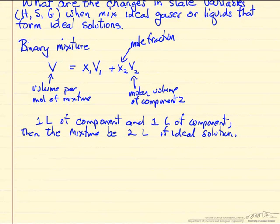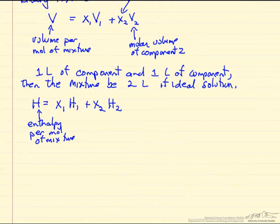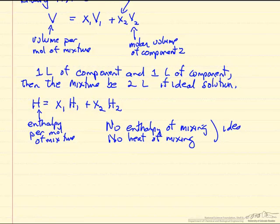And a similar relation exists for the enthalpies. Enthalpy of the mixture, this is the enthalpy now per mole of the mixture. And it's x1 times enthalpy per mole of pure component 1, and mole fraction component 2, and enthalpy per mole of component 2. So this says there's no enthalpy of mixing. There's no heat of mixing. And again, we're talking about ideal solution, and ideal gas is a subset of that.